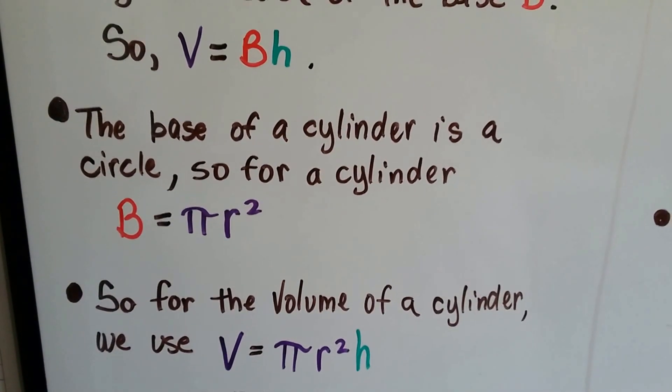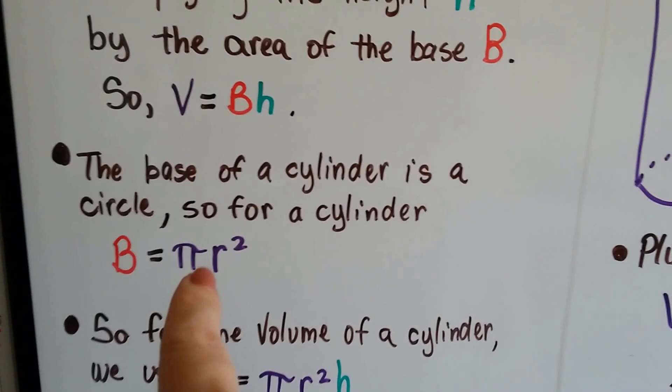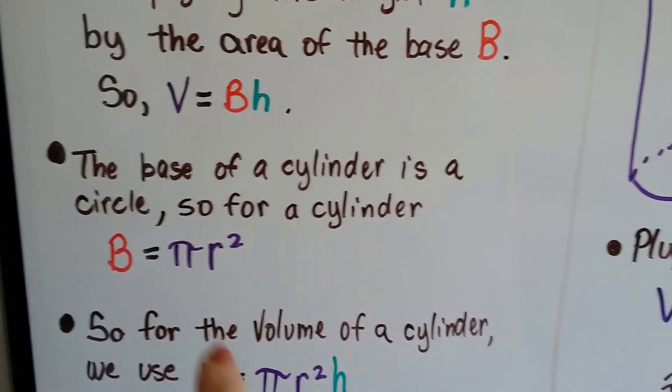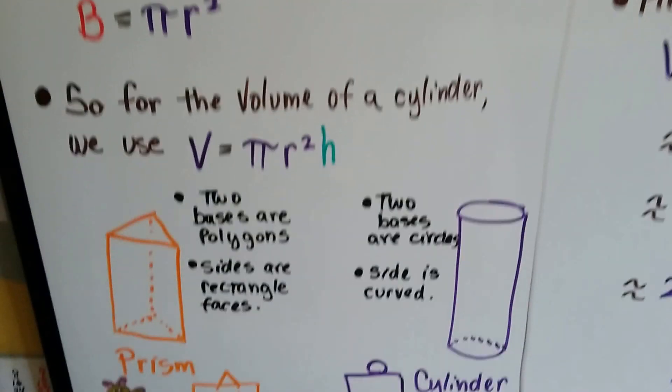So for the volume of a cylinder, we use V equals pi r squared h. It's the base, the pi r squared, times the height. It's the B and the h multiplied together. So we put pi r squared next to the h.